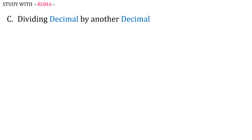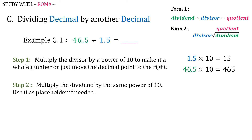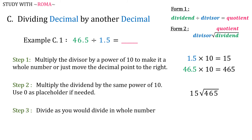For the last part, dividing decimal by another decimal. Example number 1: 46.5 divided by 1.5. Step 1: Multiply the divisor by a power of 10 to make it a whole number, or just move the decimal point to the right. So, 1.5 times 10 is equal to 15. Step 2: Multiply the dividend by the same power of 10, and use 0 as placeholder if needed. So, 46.5 times 10 is equal to 465. Step 3: Divide as you would divide in whole numbers. So, 465 divided by 15 is equal to 31.